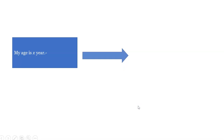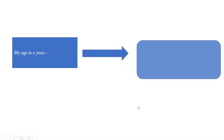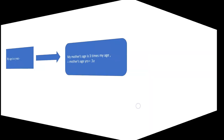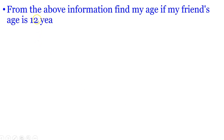My age is x years. My mother's age is 3 times my age and therefore the mother's age is 3x. These are the different conditions. Now from the above information given in the previous slides: